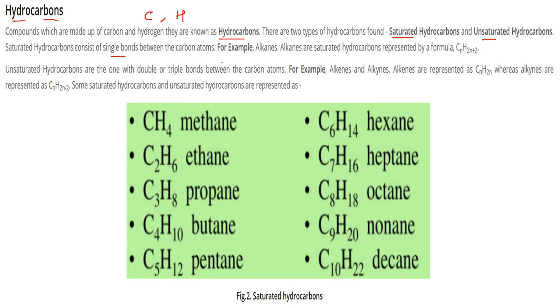Saturated hydrocarbons have single bonds between carbon atoms, like the alkanes. These are in the category of saturated hydrocarbons. The formula is CnH2n+2. So if I place 2 here, H2 times 2 plus 2, C2H2x2 is 4, plus 2, gives C2H6 ethane. Likewise, these are all saturated hydrocarbons following this formula.